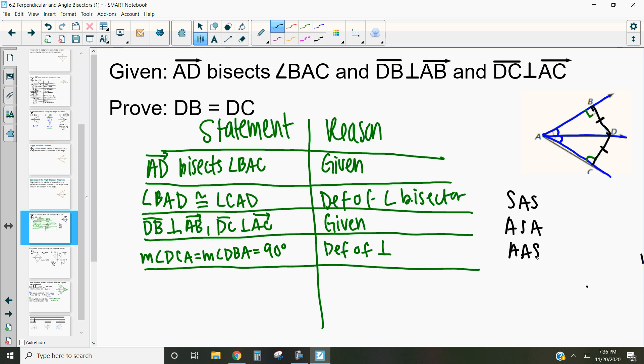So to prove this we either want to get the, to show that this side and this side are congruent or show that this side is congruent to itself. One seems a lot easier than the other and that's that this side is congruent to itself.